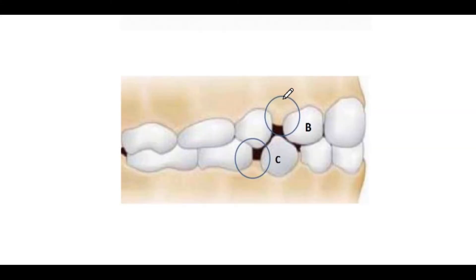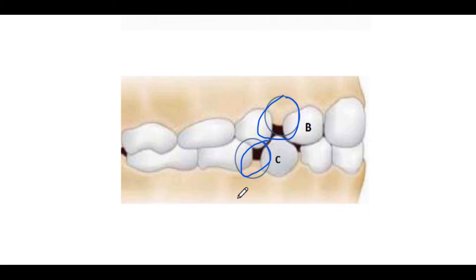Primate space is located mesial to the maxillary canine and distal to the mandibular canine. These are the primate spaces.